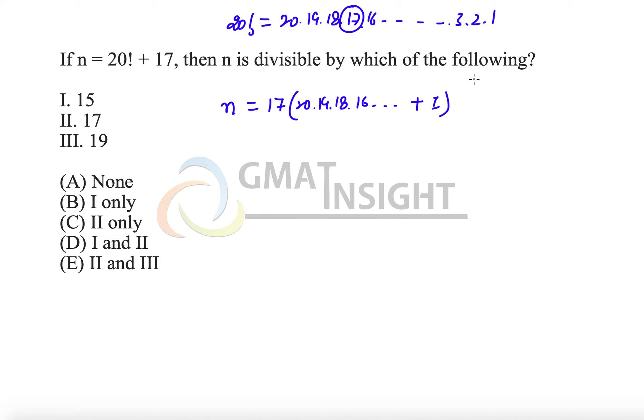Then n is divisible by which of the following? Now one thing we're sure about is n will definitely be divisible by 17 because 17 has come out. That means the answer cannot be option A or option B. Now it has to be either C, D, or E because all three of them have 17 as part of it.